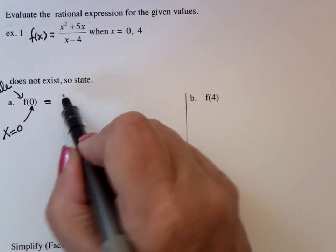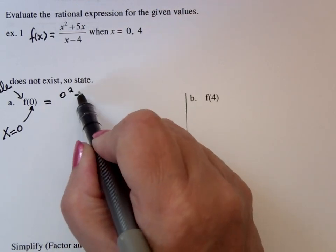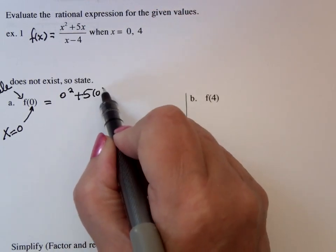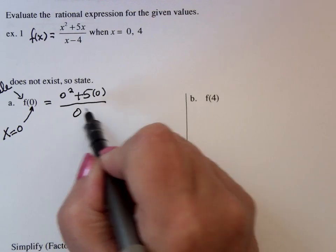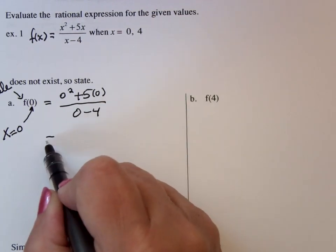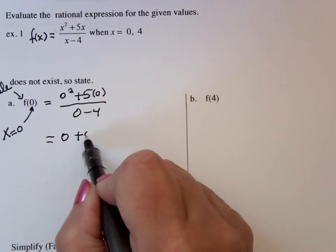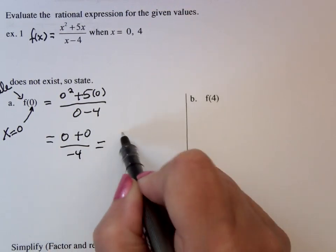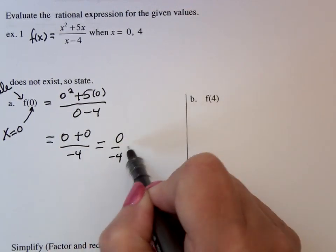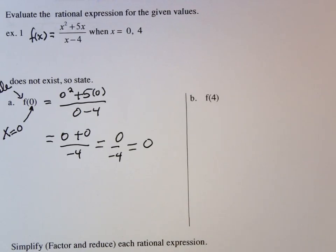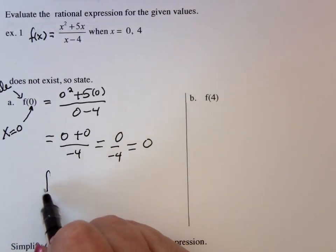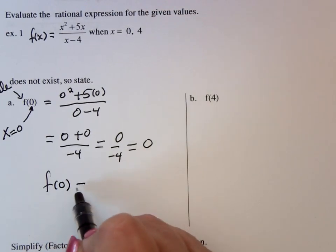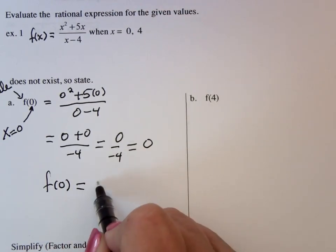So this would give me 0 squared plus 5 times 0 over 0 minus 4, which is 0 plus 0 over minus 4, which is 0 over minus 4 or 0. So we would say that f of 0 is 0.